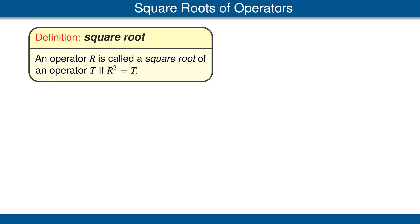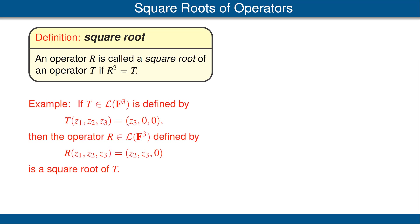Let's look at some examples. For our first example, suppose T is the operator on F³ defined by T(z₁, z₂, z₃) = (z₃, 0, 0). Let R be the operator defined by shifting over one slot instead of two. Then, as you can verify, R² = T. In other words, if you do R twice, you get T. Thus, R is the square root of T.